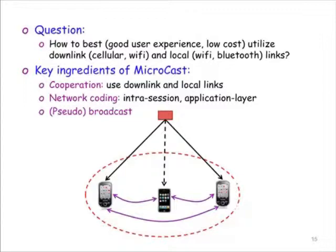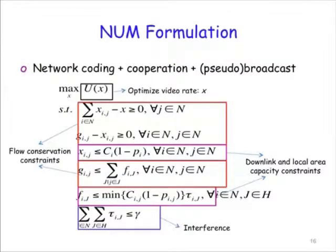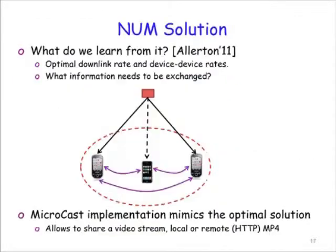These phones have computing, storage, and communication resources. They can connect to the internet through a cellular or Wi-Fi connection, and to each other through Wi-Fi or Bluetooth. We developed a scheme called Microcast based on three ingredients: cooperation, where all smartphones use their collective resources; network coding, which is intra-session and implemented at the application layer to make distributed scheduling easier; and pseudo-broadcast, which exploits the nature of the wireless channel combined with application-layer network coding. We started from a network utility maximization formulation and developed a distributed solution providing the optimal downlink and device-to-device rate.